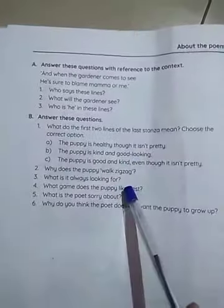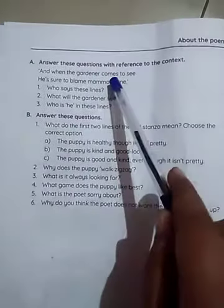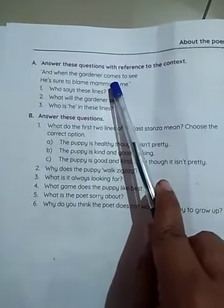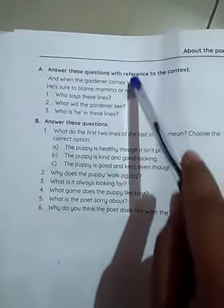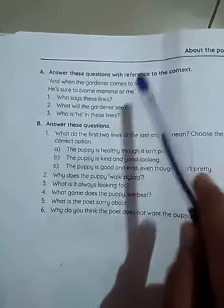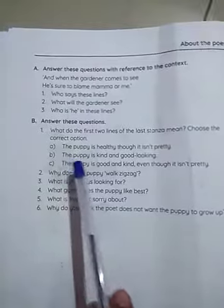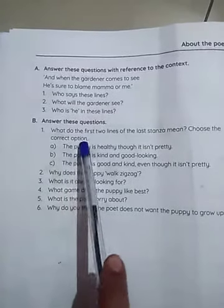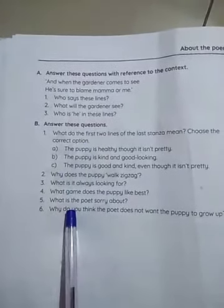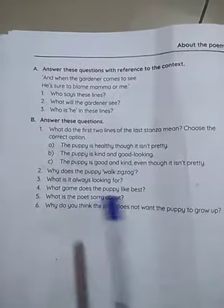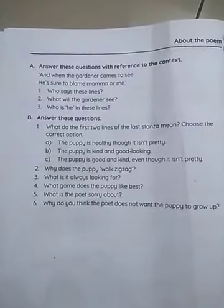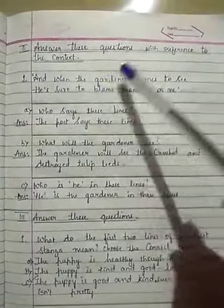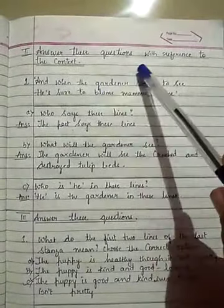You have two sections. Section A is reference to the context, which has three questions. Section B is answer these questions, which has six questions. You have to write all of these in your English classwork.